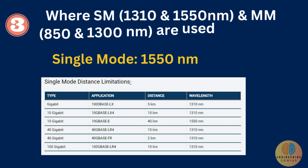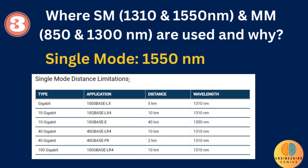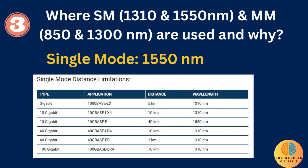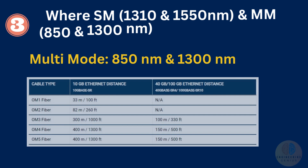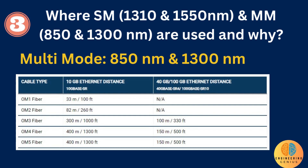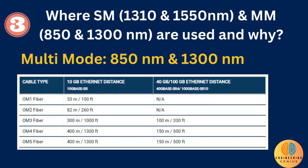In single-mode fiber, for 1550 nanometer wavelength, dispersion loss is 0.25 decibels per kilometer. Because of this lower dispersion loss, 1550 nm is used for distances from more than 40 kilometers up to 120 kilometers. The loss of multi-mode fiber is much higher at 850 nanometers (short wavelength) at 3 decibels per kilometer, while at 1300 nanometers (long wavelength) it is only 1 decibel per kilometer. That means at 850 nm, half the light is lost in 1 kilometer, while only 20% is lost at 1300 nanometers.